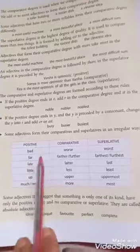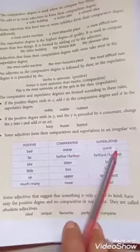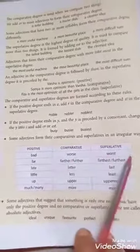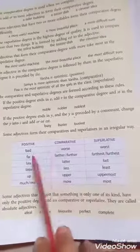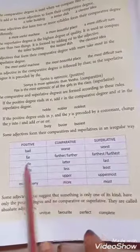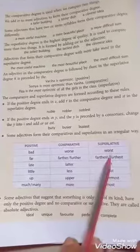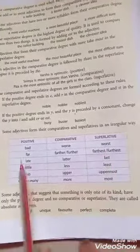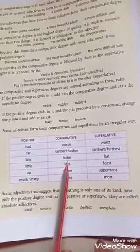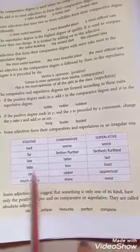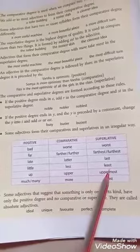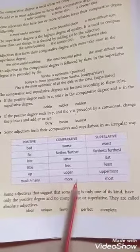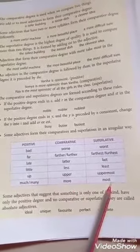Some adjectives form their comparative and superlatives in an irregular way. For example: bad, worse, worst — we cannot say 'badder' or 'baddest'. Far — further — furthest. Late — latter — last. Little — less — least. Up — upper — uppermost. Much — more — most.